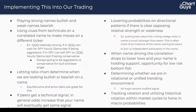Another element: if peers get a technical signal, in general odds increase that your name will eventually get the same signal. We see this across different sectors. In the uranium space, when one name starts a weekly bounce, it's likely that other major miners will do the same. One name starts monthly consolidation, others likely follow. We're seeing it in the broad market right now with quarterly lower highs being set one by one across major players. Pay attention to what your correlated peers are doing — you can get an edge from them for your own name.